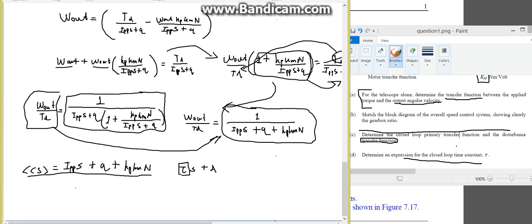It's just tau s plus a. So the form we are looking for is tau, the time constant, and rearrange for each term without the s.